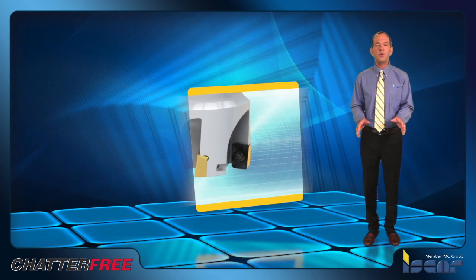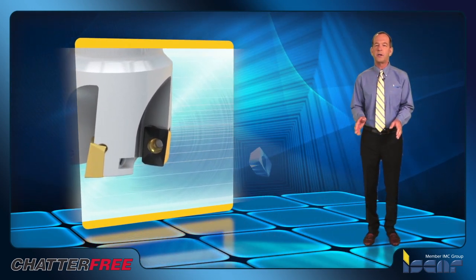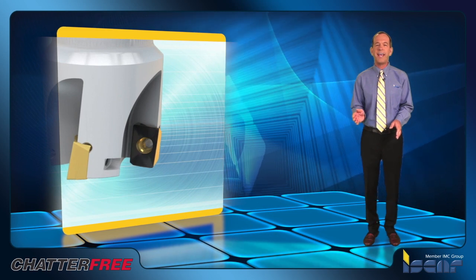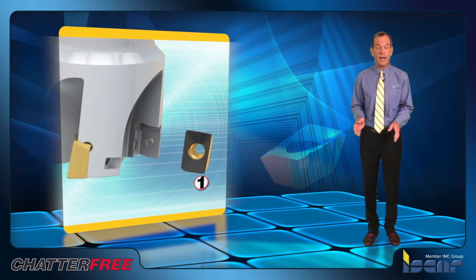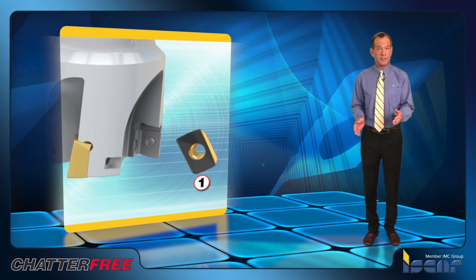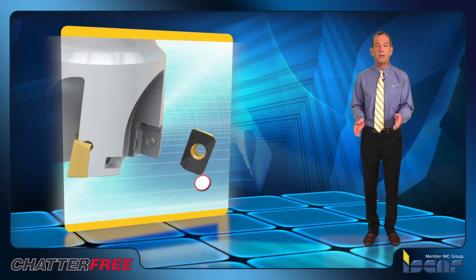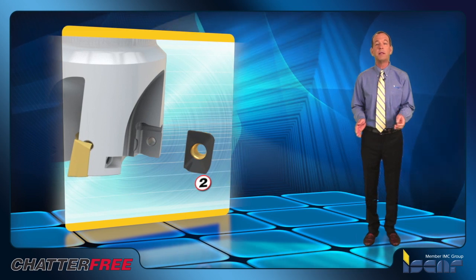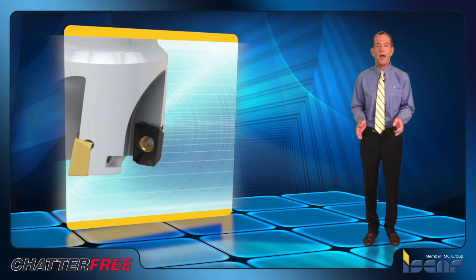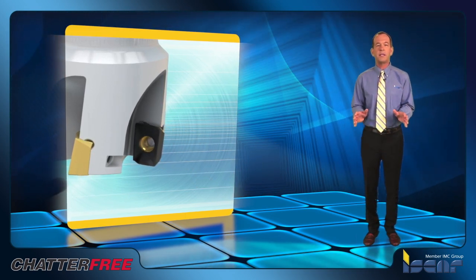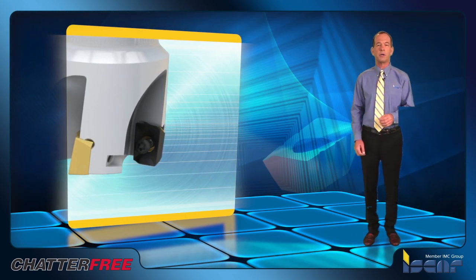The design of the new one-sided insert HM90ADCT1505CF, which is intended for clamping into the popular milling cutters of the Heli 2000 family, fundamentally uses a different approach.